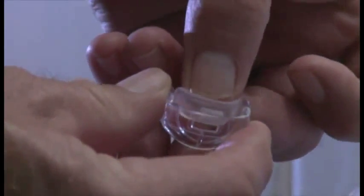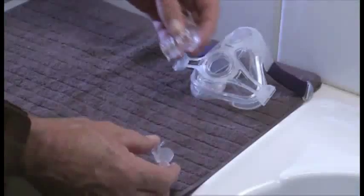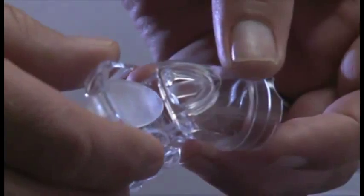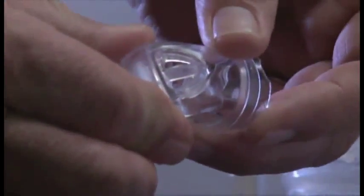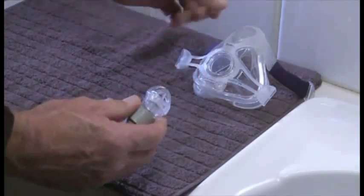To reassemble the elbow assembly, insert the valve into the clip and push the valve clip onto the elbow. Attach the swivel to the end of the elbow and attach the elbow assembly to the mask.